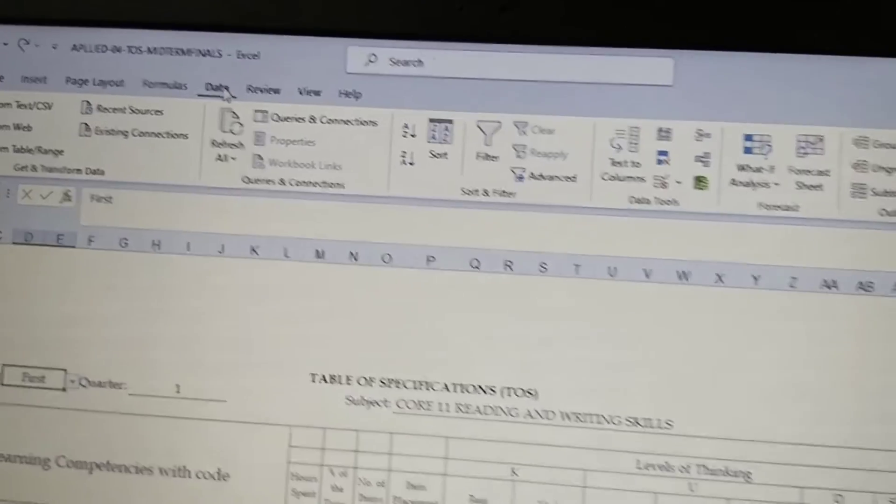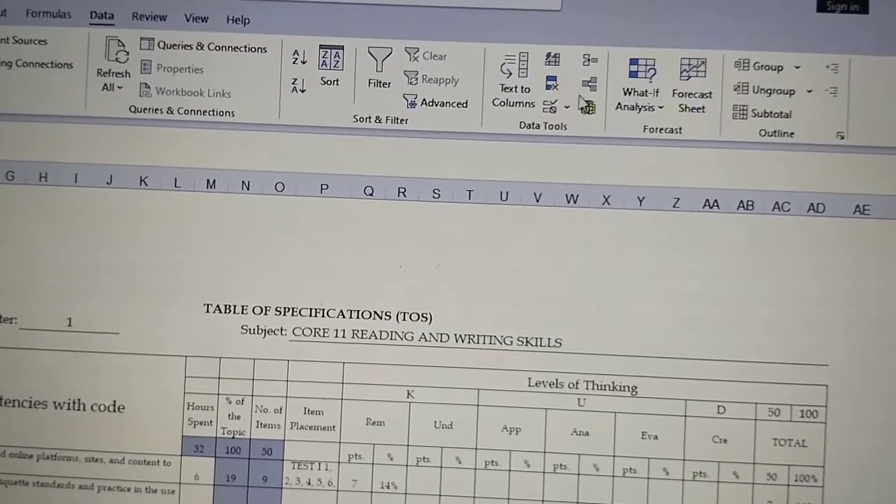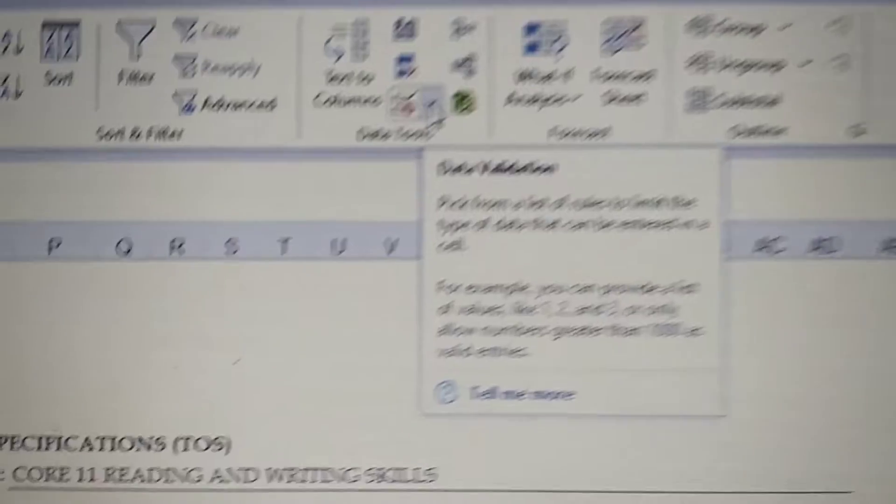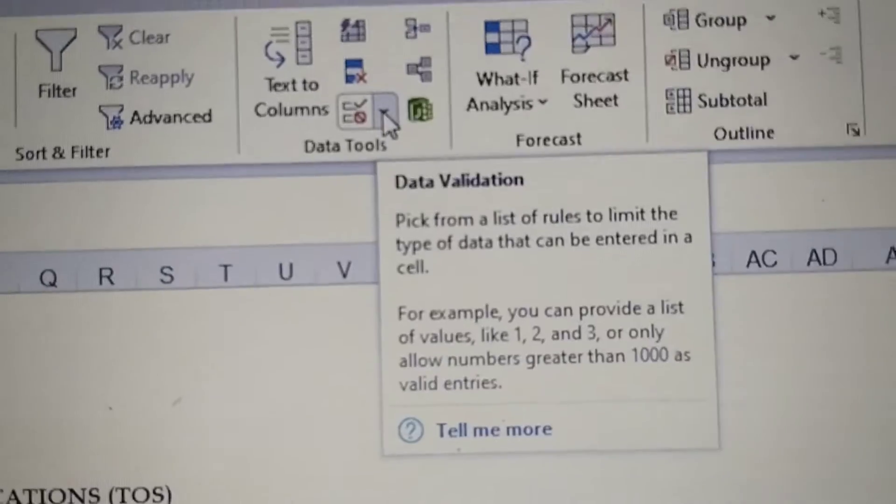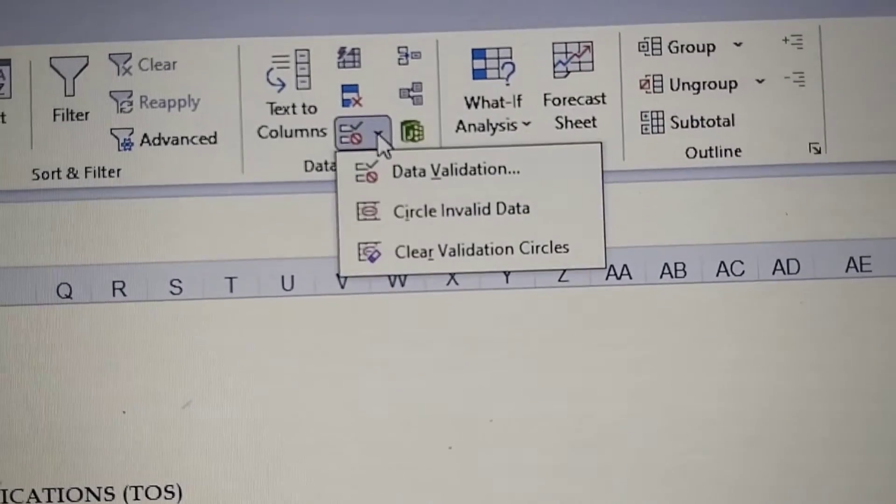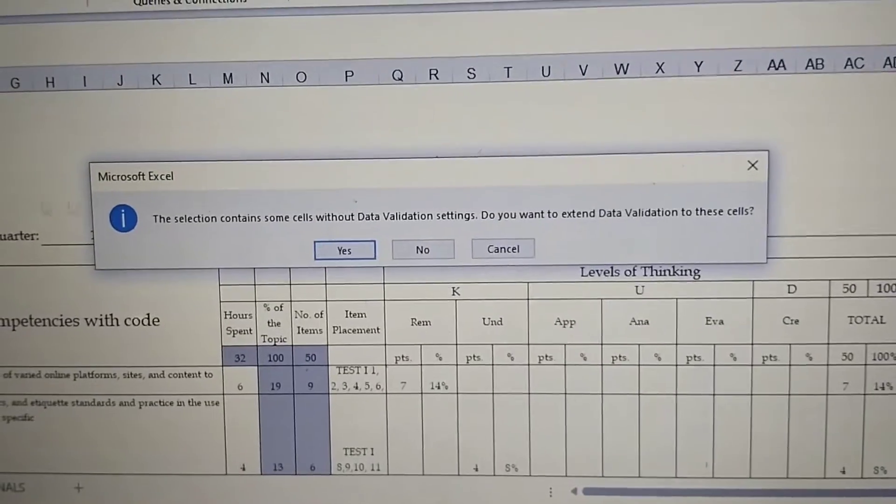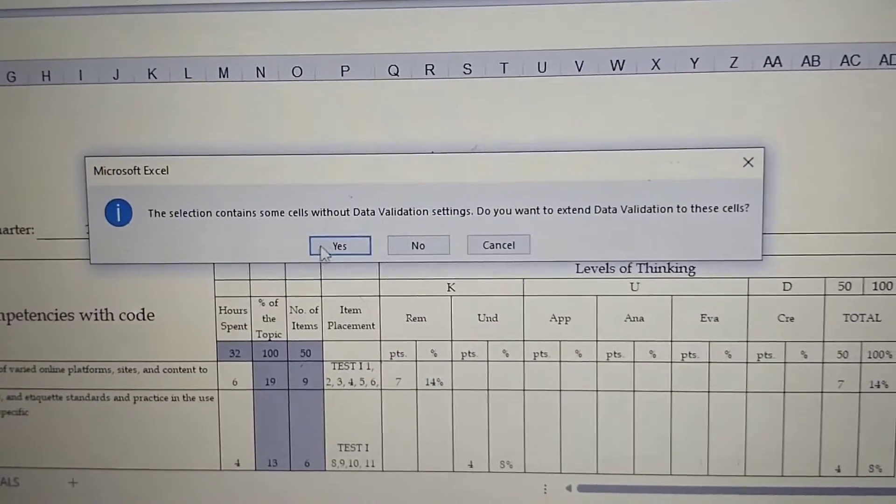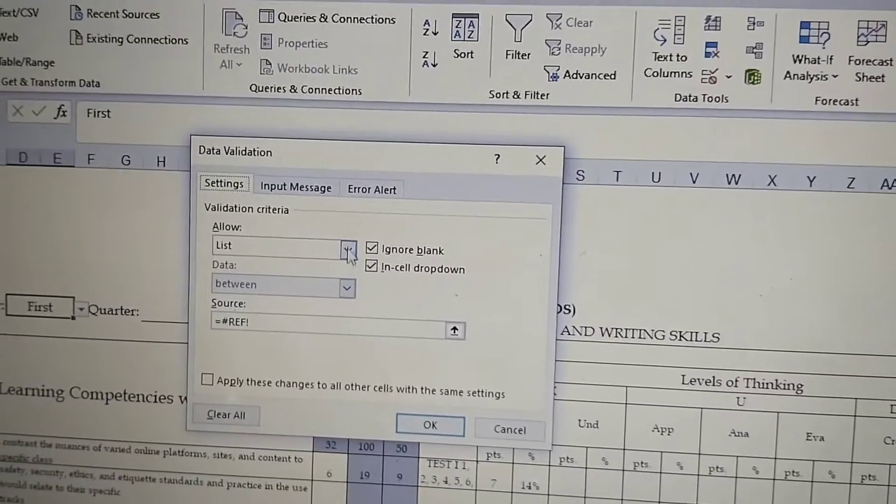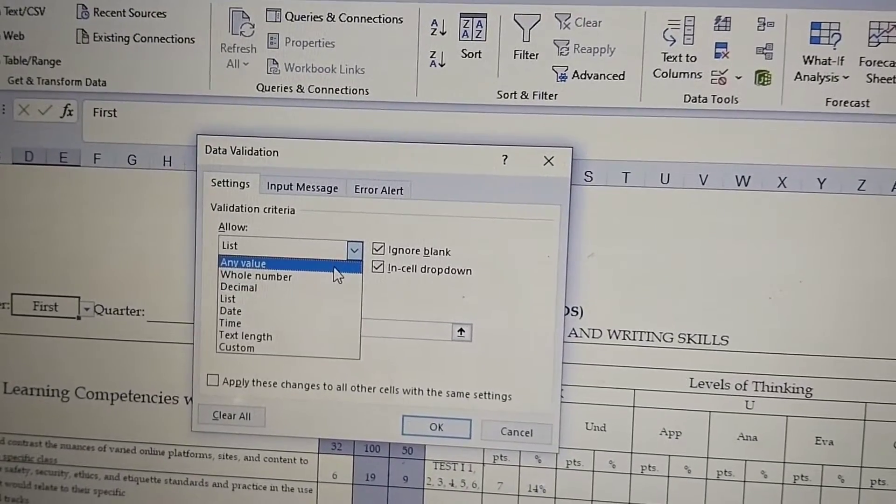We go to Data and then we find here the Data Tools. After that we click on this one and then we're going to go to the Data Validation so we could change the value of the data. We just click on Yes and then we're going to select here Any Value, which means we can now input whatever value we want to input, and then click OK.